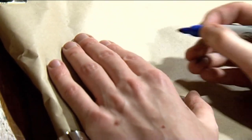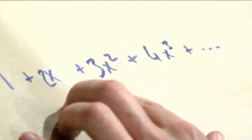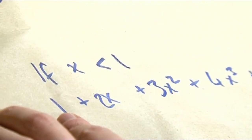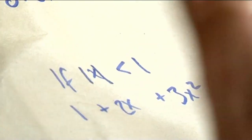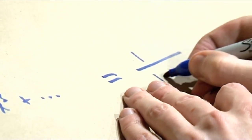Here's a formula you may learn if you study mathematics. It starts: 1 plus 2x plus 3x squared plus 4x cubed, and that goes on forever. If the size of x is less than 1, this actually simplifies to 1 over (1 minus x) squared. That complicated infinite expression is equal to that, as long as x is less than 1 in absolute value. We're going to use this to work out our fraction.